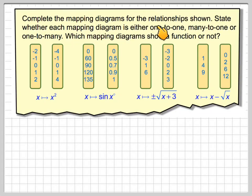Complete the mapping diagrams for the relationship shown. State whether each mapping diagram is either one-to-one, many-to-one, or one-to-many. Which mapping diagrams show a function or not?